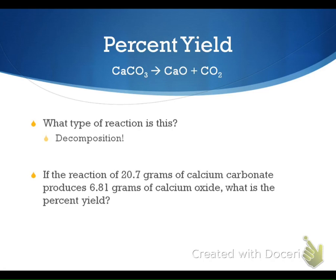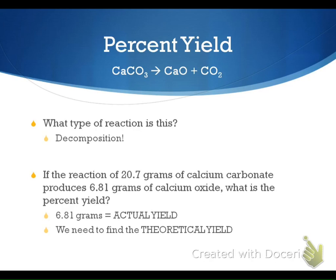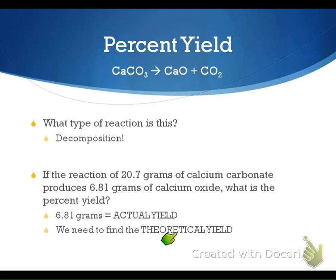Try this one on your own — it's a decomposition reaction. When the problem says 'produces,' that means it's an actual yield — they actually did it in the lab and got 6.81 grams. So the actual yield is given, and you need to find the theoretical yield to calculate percent yield from that.